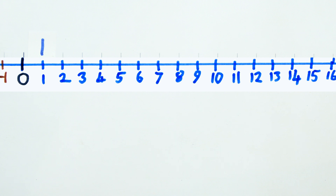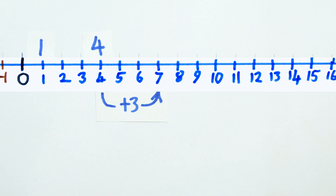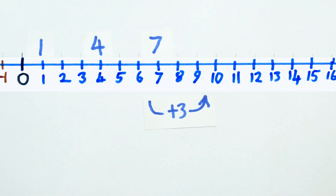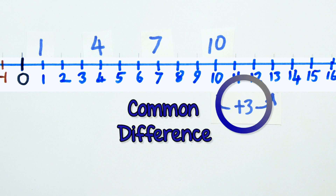This sequence starts at 1, add 3 to get 4, add 3 again to 7, and then to 10, and so on. The value added each time is the common difference.